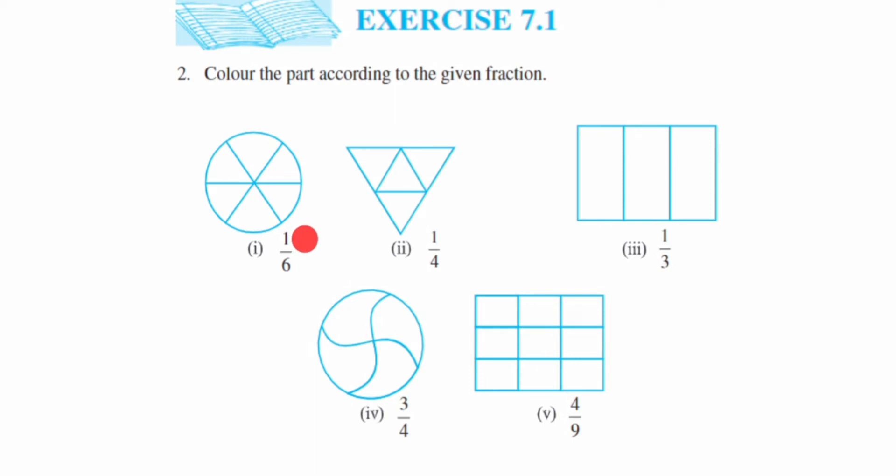See how many numbers are given, that many parts you have to color. Here only one is given, it means we have to color only one part here. So let's start coloring it. You can color any part. Let me take this one, so this will be my one part. So this is the first answer.